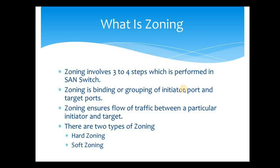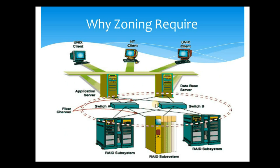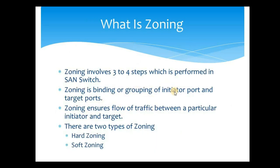Now let's see what zoning is. Zoning involves three to four steps performed in a SAN switch, though some environments may follow five or six steps. By definition, zoning is the binding or grouping of initiator ports and target ports. Initiator ports are the HBA ports attached to the server or host, and target ports are the storage ports. Both are connected to the SAN switch fabric, and we do a grouping of them through zoning. This grouping refers to grouping the FC alias, device alias, or alias of the WWPN. There are two types of zoning: hard zoning and soft zoning.